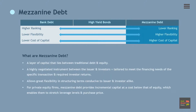Mezzanine debt refers to a layer of capital that lies between traditional debt and equity. It is a highly negotiated instrument between the issuer and investors, tailored to meet the financing needs of the specific transaction and required investor returns. As such, mezzanine debt allows great flexibility in structuring terms, conducive to issuer and investor alike. For private equity firms, mezzanine debt provides incremental capital at a cost below that of equity, which enables them to stretch leverage levels and purchase price when alternative capital sources are inaccessible.